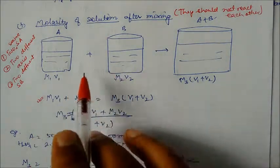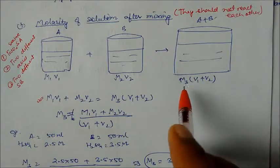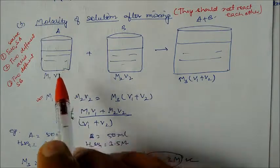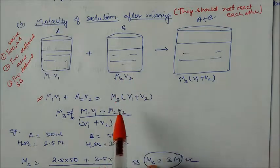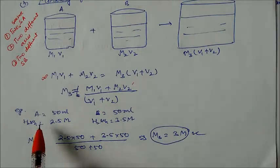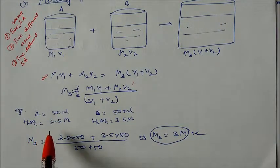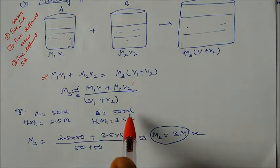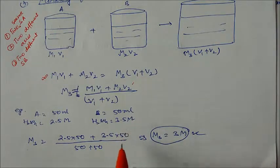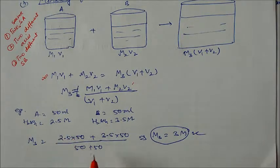If the two solutions are, say, two strong acids, they mix without reacting, and we get the molarity of the resulting solution as: M3 = (M1V1 + M2V2) / (V1 + V2). For example, container A has 50 ml of 2.5 molarity and container B has 50 ml of 3.5 molarity. So M3 = (2.5×50 + 3.5×50) / (50+50) = 300/100 = 3 molarity. The concentration increases in this case.